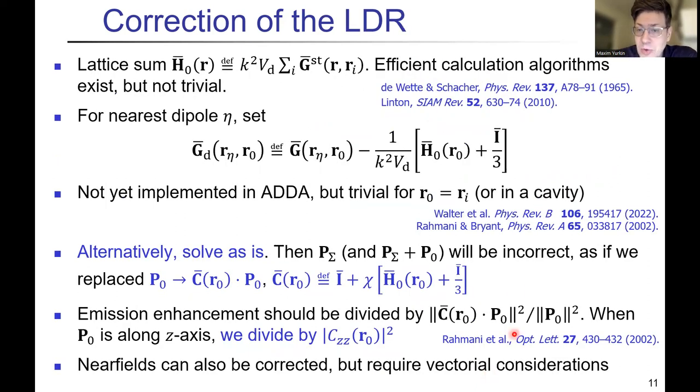For the LDR, quite a lot of formulas here. Important is that we have this sum rule of the static green tensor, and it will actually depend a lot on the position r inside the lattice. We can compute these lattice sums, but I have not yet done it inside the ADDA code. But what we can do is solve an incorrect problem, but then it will be like a problem for a different exciting dipole moment, and then I can correct for that. In the simplest case of that aligned dipole, I just need to divide the final result for emission enhancements by this factor. Near fields can also be corrected, but we have not played with that yet.